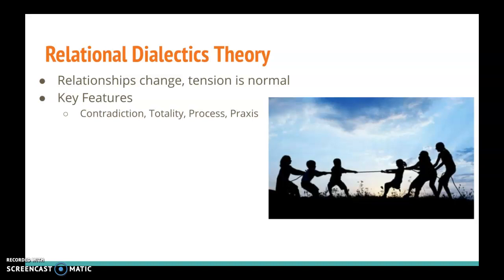Let's talk about contradiction first. Within a relationship, we often come across two wants, needs, or desires that are contradictory to one another, and those contradictions are natural in any relationship. They're also sometimes referred to as tensions. Totality is talking about the fact that we need to look at all of the tensions that exist within a relationship, rather than just looking at one in isolation.